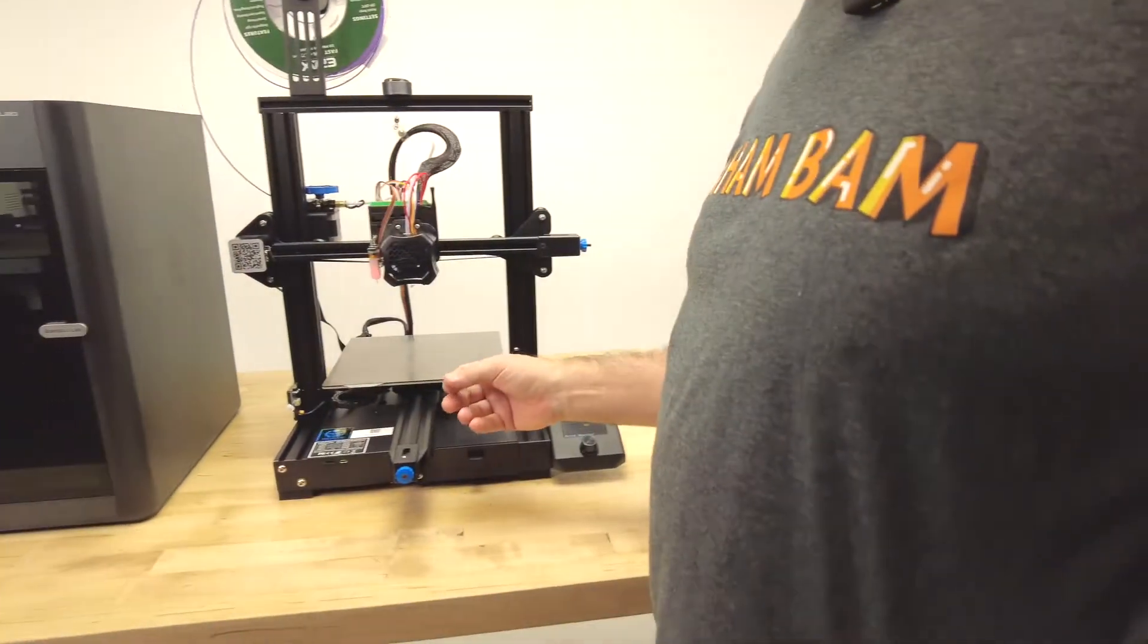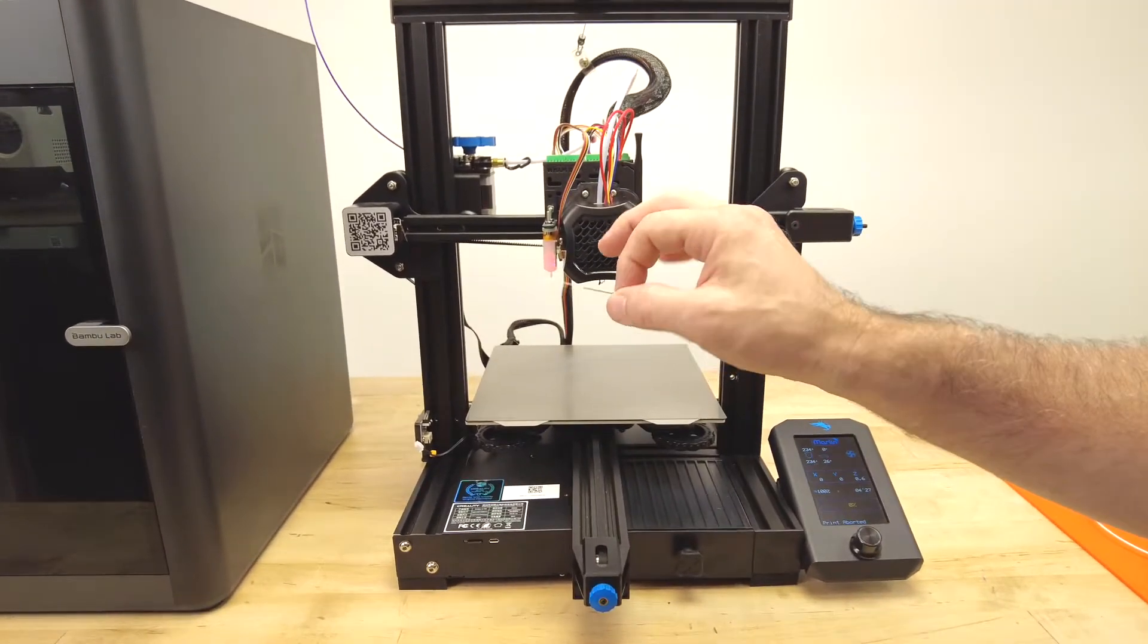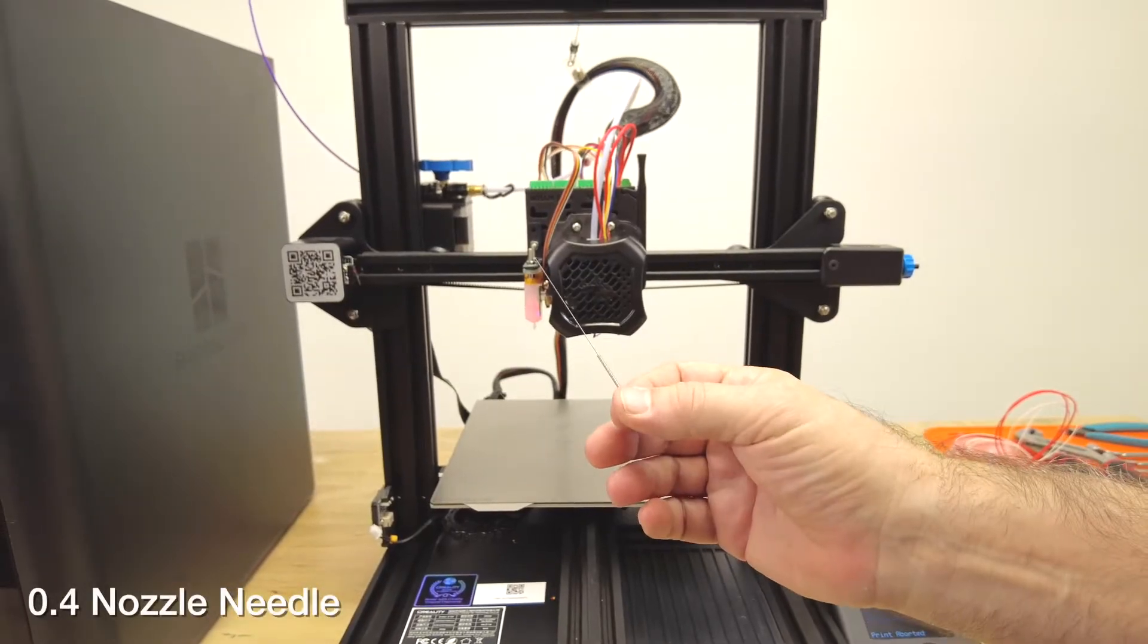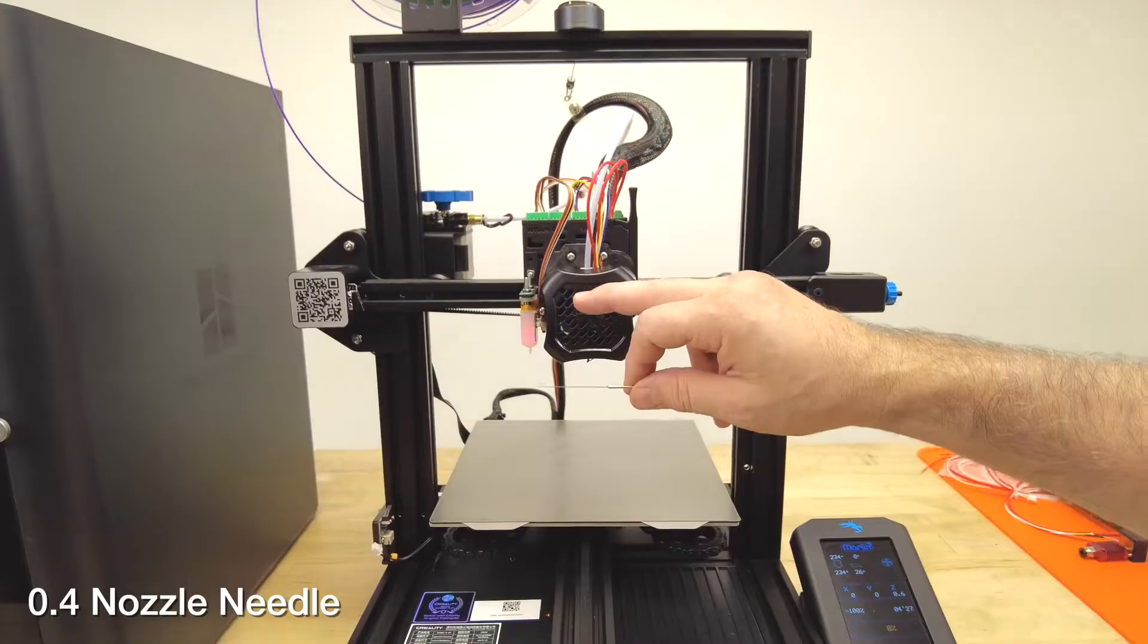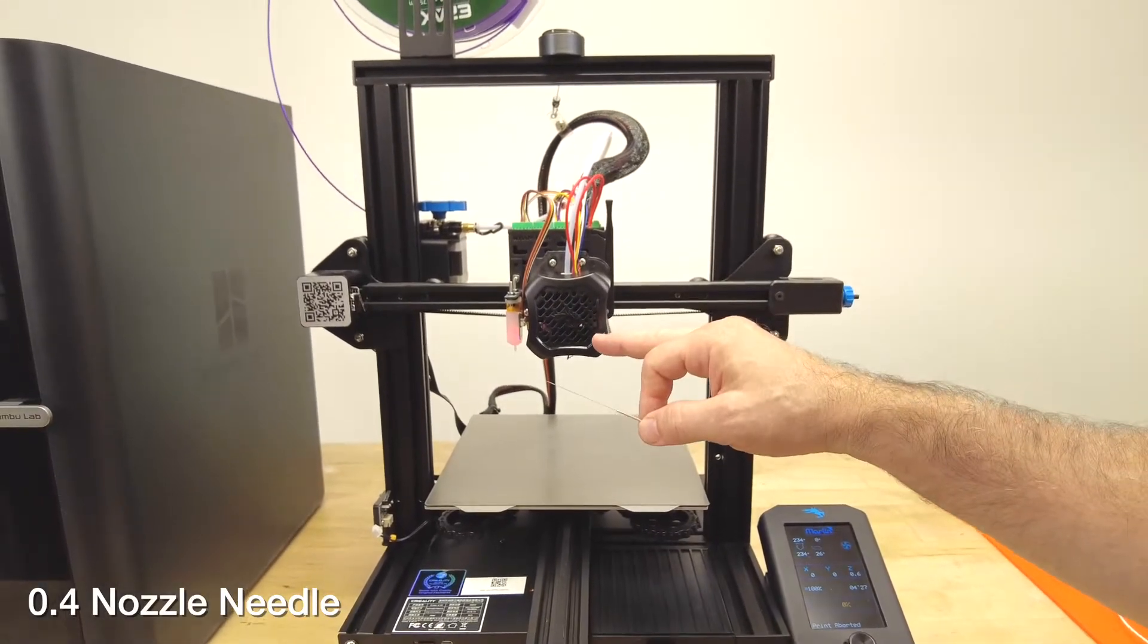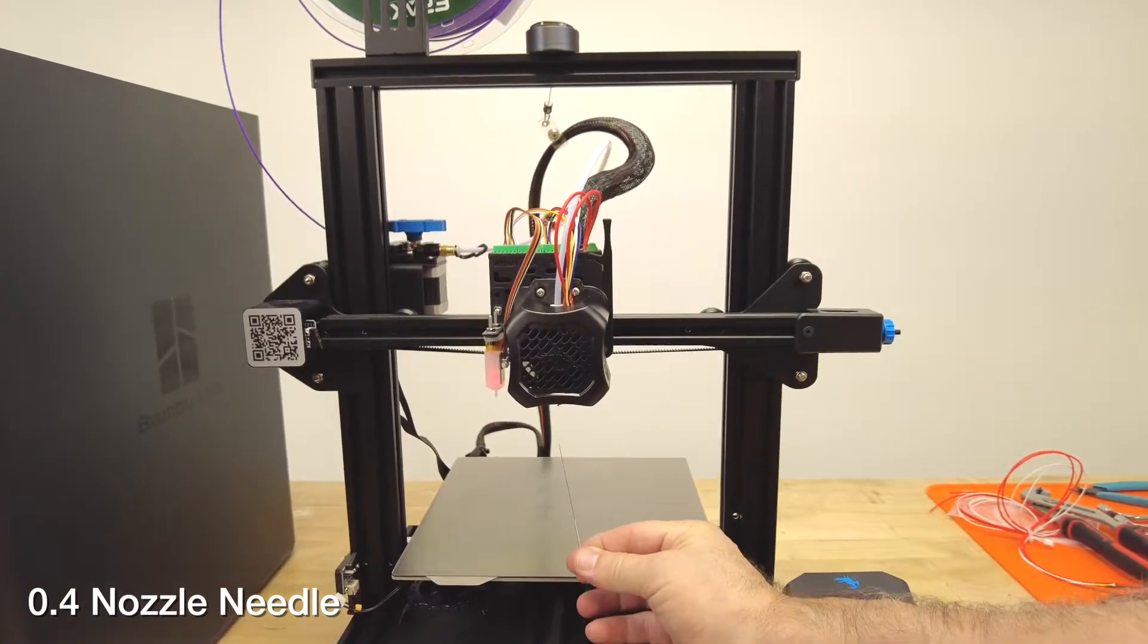One of the first things we always want to try before anything else is using a nozzle needle. If you do have a jam, the easiest thing to try that sometimes alleviates the problem is using a small nozzle needle that comes in our nozzle maintenance kit, a 0.4 needle for the 0.4 nozzles or larger. You want to make sure to heat up your hot end to over your previous print temperature so we're sure it's melting anything that might be in there.